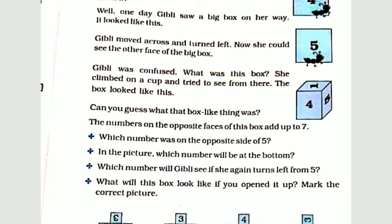In the picture, which number will be at the bottom? There is 1 on top, so on the opposite side we add to get 7, which means the bottom is 6. Which number will Ghibli see if she again turns left from 5? The opposite side of 4 adds to 7, giving 3, so the left side will show 3.